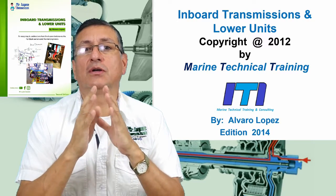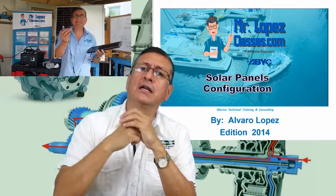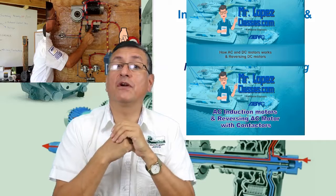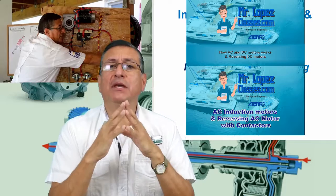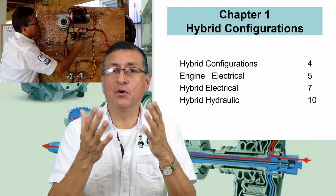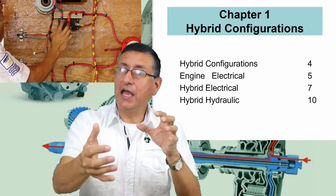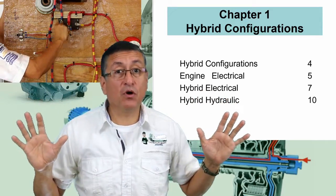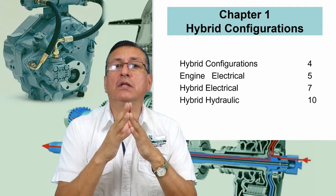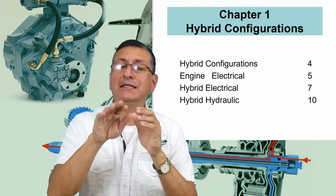I recommend that you check my videos related with the solar panel configuration in the electrical book. That is a wonderful episode related with the configuration of the solar panels. Another wonderful episode that I recommend for this class is how to reverse AC and DC motors. Why I mention those episodes? Because in the first chapter of this class we are going to talk about the hybrid configurations, the hybrid boats, and I am going to explain how to convert your boat into a hybrid boat — how you can remove the gas or diesel engine and replace it with an electric motor. We are going to try to understand what type of motor is better, if it is AC or DC. For that reason I recommend those videos — the video related with the procedure to reverse the sense of rotation in AC and DC motors.